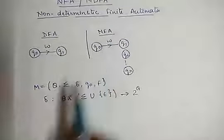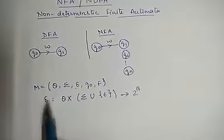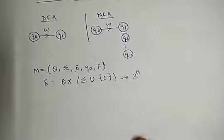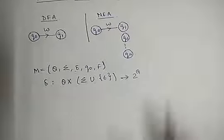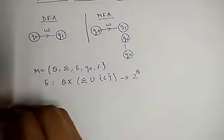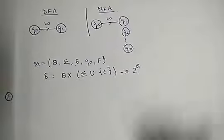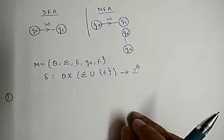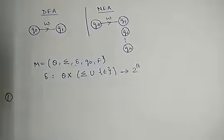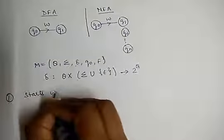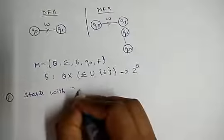The difference between NFA and DFA in terms of tuples is the transition function. Now I will discuss some simple examples of NFA — how we create an NFA for some set of strings. For example, first suppose I have to construct an NFA for all strings that start with A.